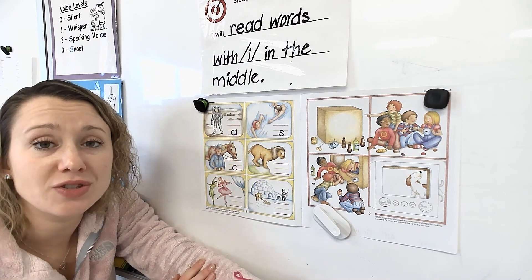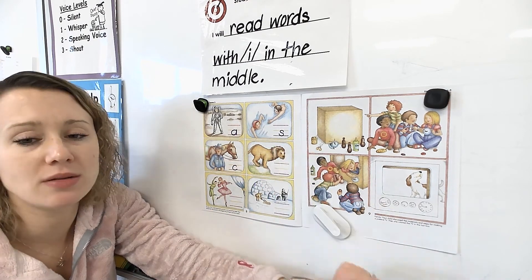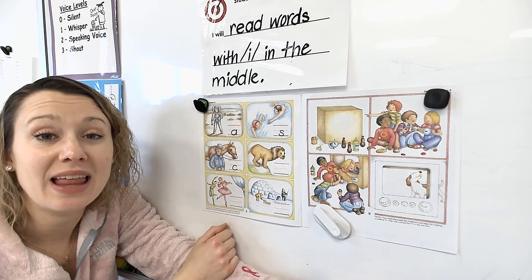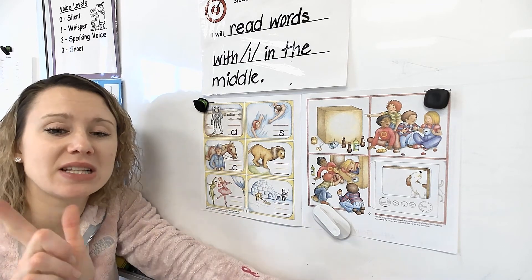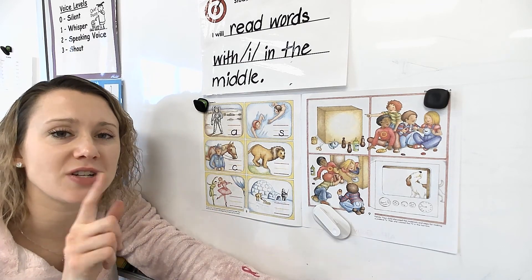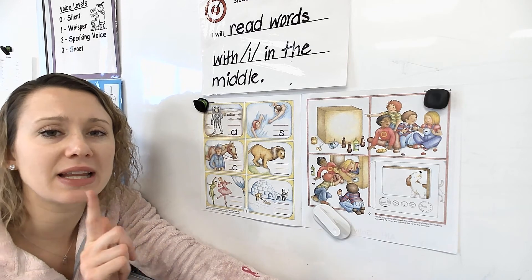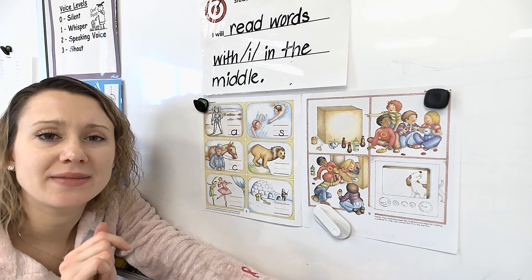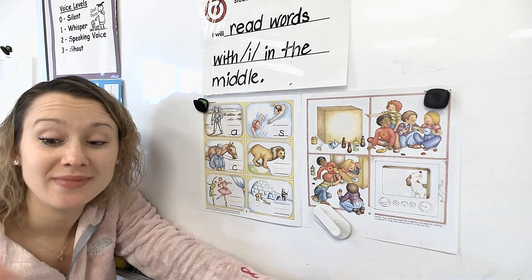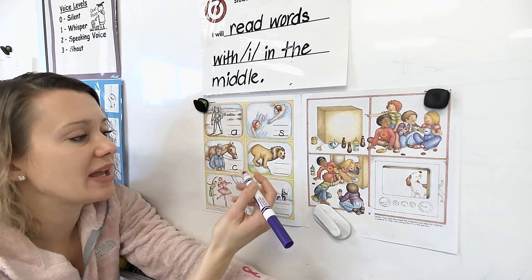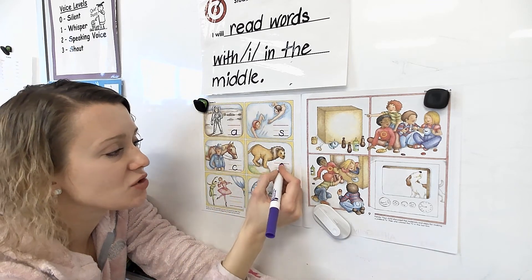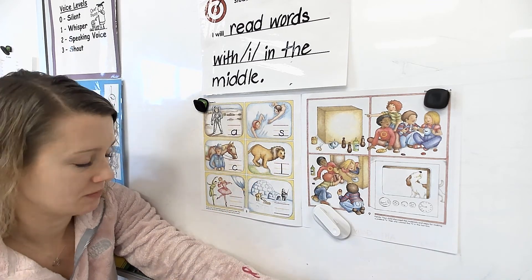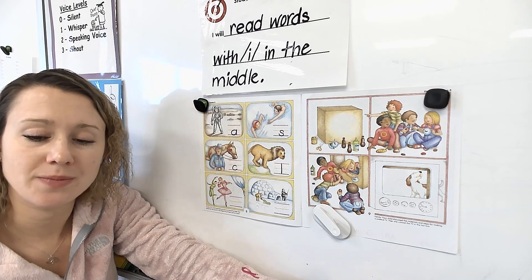If you go to the zoo and you see this animal — what animal is this? Lion. My turn first: lion. Your turn: lion. What letter starts? Lion — L. We're going to write lowercase L. Strawberry down to chocolate. Park your pencil.